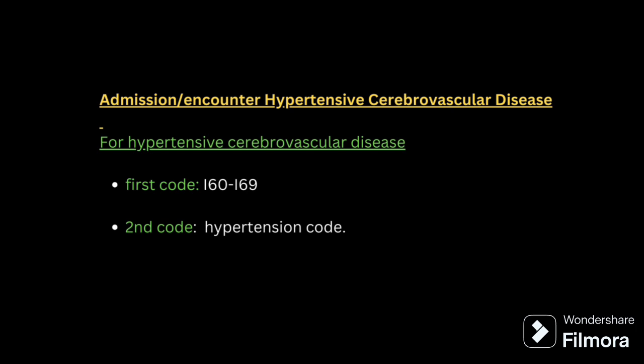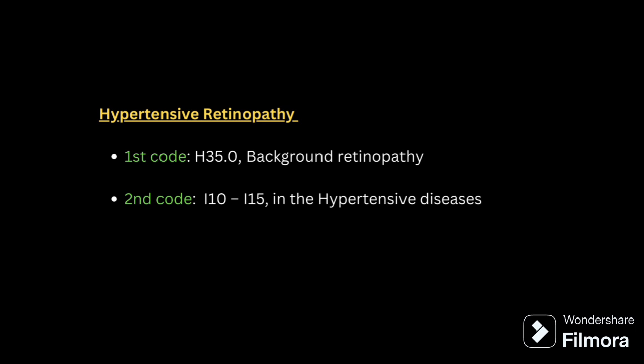For hypertensive cerebrovascular disease, the first code is given from the I60-I69 series for the cerebrovascular condition, and the second code is for hypertension from I10-I15. For hypertensive retinopathy, the first code is H35.0 for hypertensive retinopathy, and the second code is for the hypertension-related condition from I10-I15.